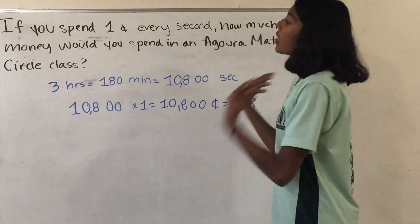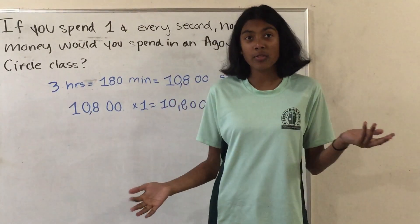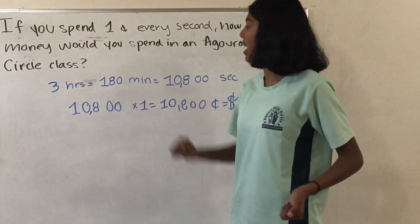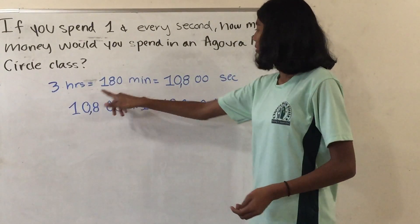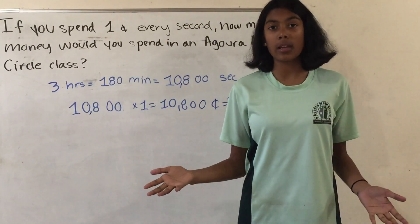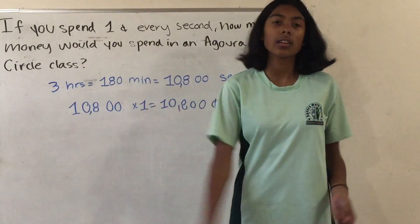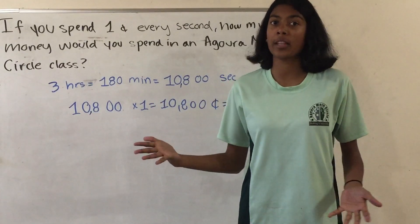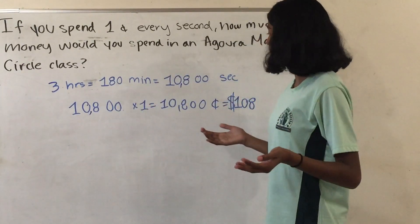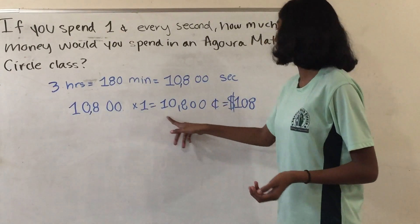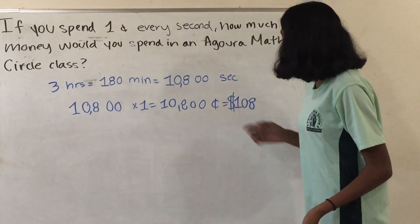For our last problem: if you spend 1 cent every second, how much money would you spend in an Agorah Mad Circle class? An Agorah Mad Circle class is 3 hours. We know 1 hour is 60 minutes, so 3 times 60 is 180 minutes. And in each minute we have 60 seconds, so 180 times 60 equals 10,800 seconds. So we multiply that by 1 cent, giving us 10,800 cents. Or, if you write it with a dollar sign, you divide by 100 and get $108.